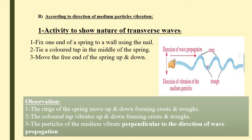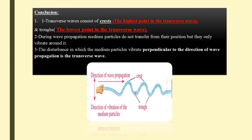When moving the hand up and down, this motion is perpendicular to the direction of the spring. We can conclude that a transverse wave consists of crests — the highest points — and troughs — the lowest points. During wave propagation, medium particles don't transfer from their position; they only vibrate in the same place. The disturbance in which medium particles vibrate perpendicular to the direction of wave propagation is called a transverse wave.